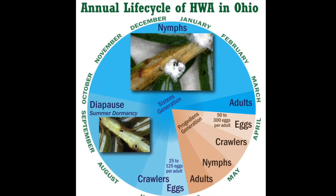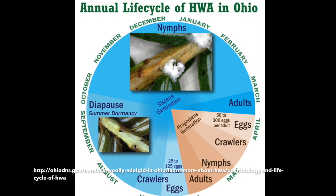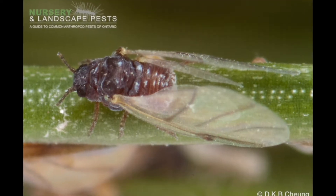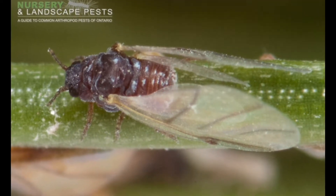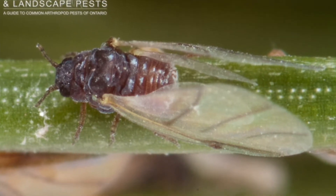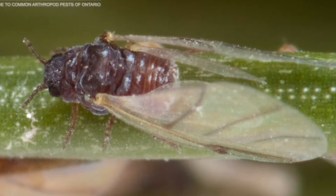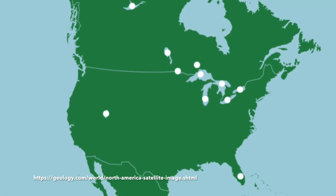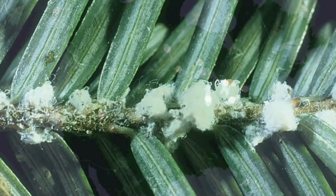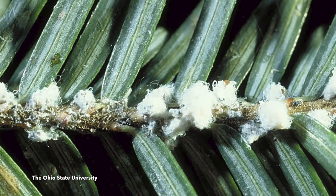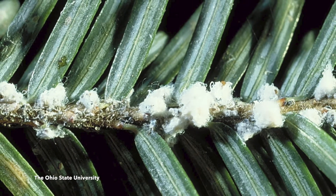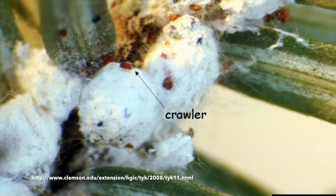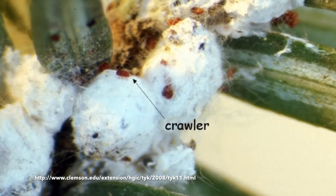They rapidly progress through four nymphal instars and reach adulthood again by late May into early June. These spring generation females may develop wings, being more common when they are crowded. The winged forms fly away in search of a spruce host, but no suitable spruce host is present in North America, so the females die. The remaining wingless females lay eggs, usually less than 50 eggs per female. When these eggs hatch, the crawlers creep to the bases of new hemlock needles but enter a dormancy period for the rest of the summer.